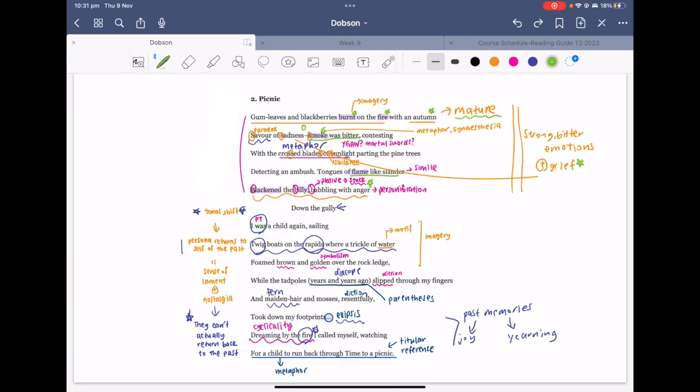If you're unsure as to why it would be a paradox, you could consider the connotations associated with each word. Savor is generally more positive in that we're enjoying something to the fullest, which is in contrast to the connotations associated with sadness which is a lot more negative.